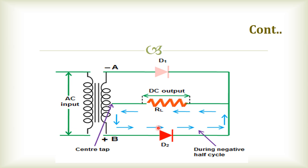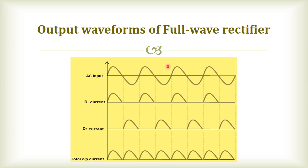As a result, both half cycles — positive and negative — of the input AC signal are allowed. So the output DC voltage is almost equal to the input AC voltage. The output waveforms of the full wave rectifier show that D1 and D2 handle both positive and negative cycles of the output signal. When combined, continuous waveforms occur in the total output waveform. Thank you.